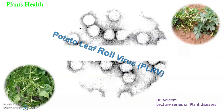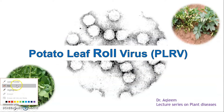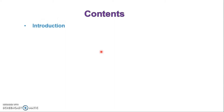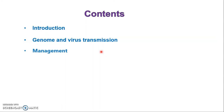Hello everyone, today I would like to talk about an important virus of potatoes and tomatoes — Potato Leaf Roll Virus (PLRV). This virus is very severe in potatoes and tomatoes worldwide and is threatening potato crops globally. Today's lecture contents are: introduction, genome, virus transmission, management, and references.